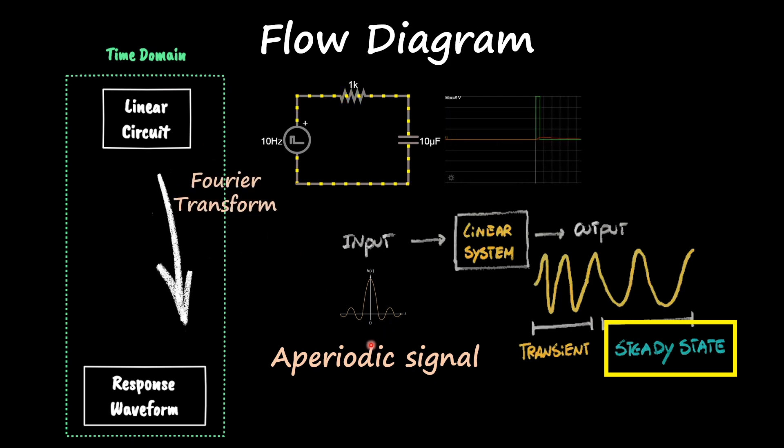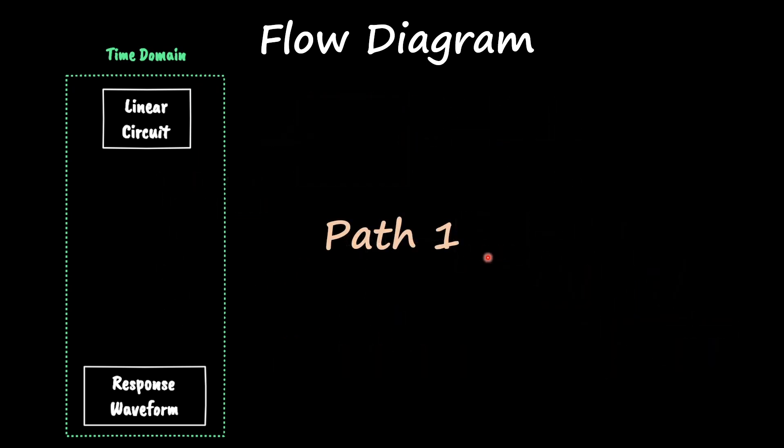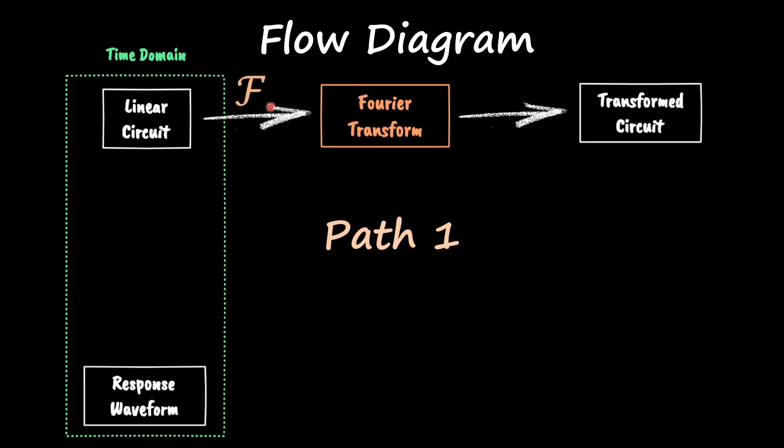Now, to apply Fourier transforms to an aperiodic signal, there are two paths. And this is similar to the diagram that we saw on the videos about Laplace. So, we start with our linear circuit and you can apply the Fourier transform to get what's called a transformed circuit.